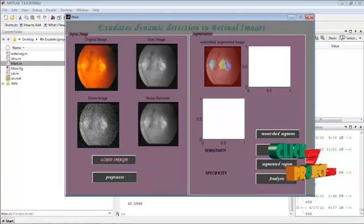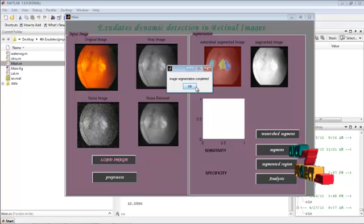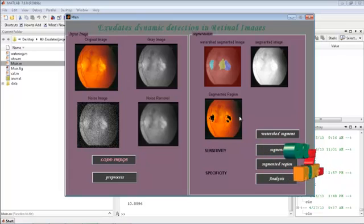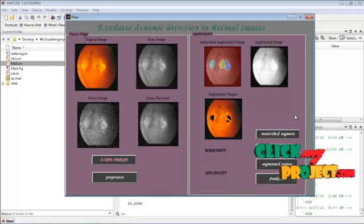The next one is segmentation. Segmentation is completed. The next is segmented region. Segmented region, this is the dynamic detection of the process. Image processing is the watershed segmentation. It gets its name from the manner in which the algorithm segments regions into catchment basins.